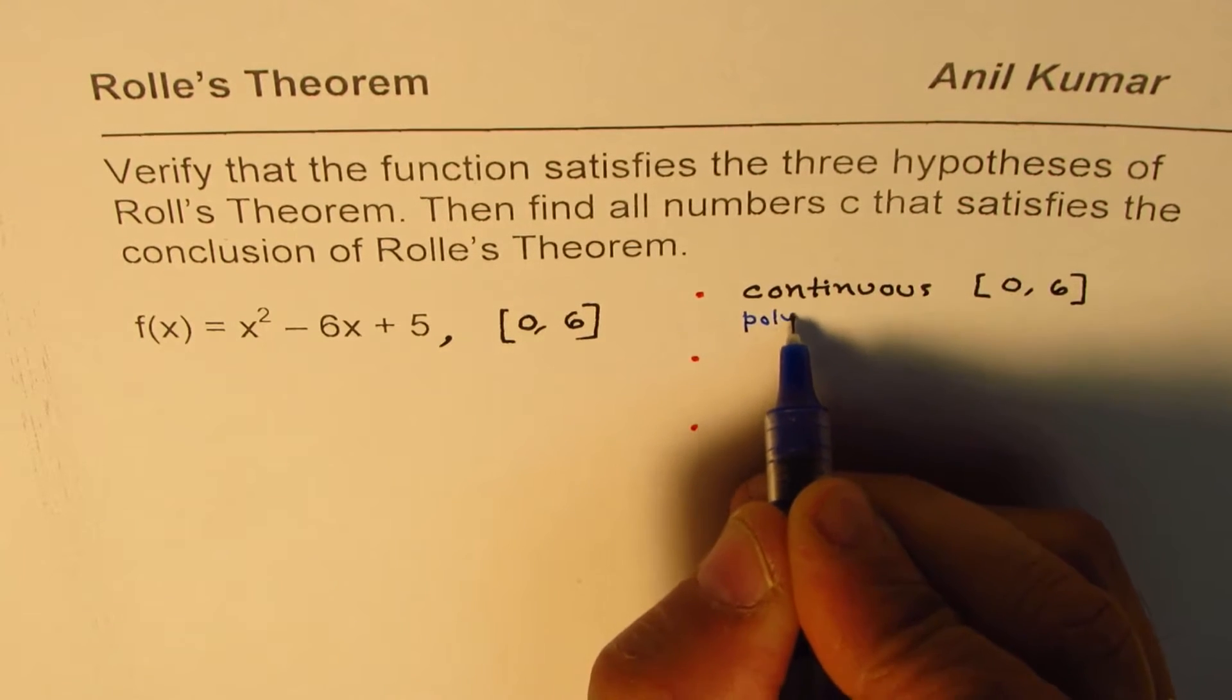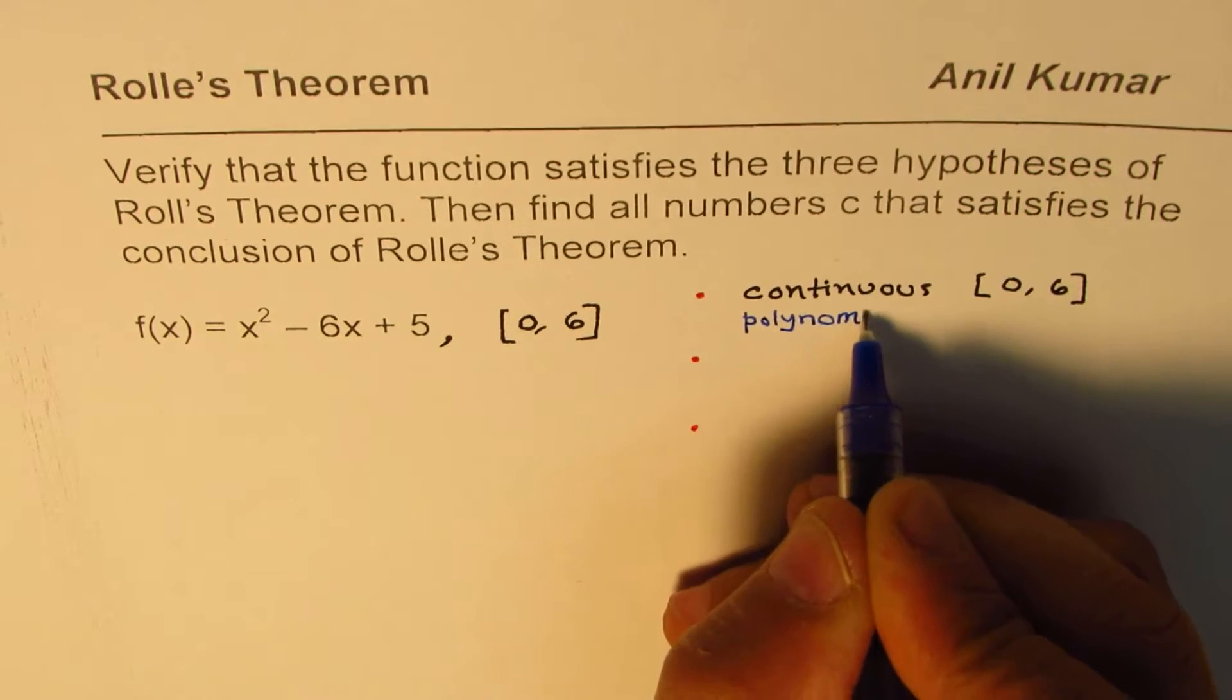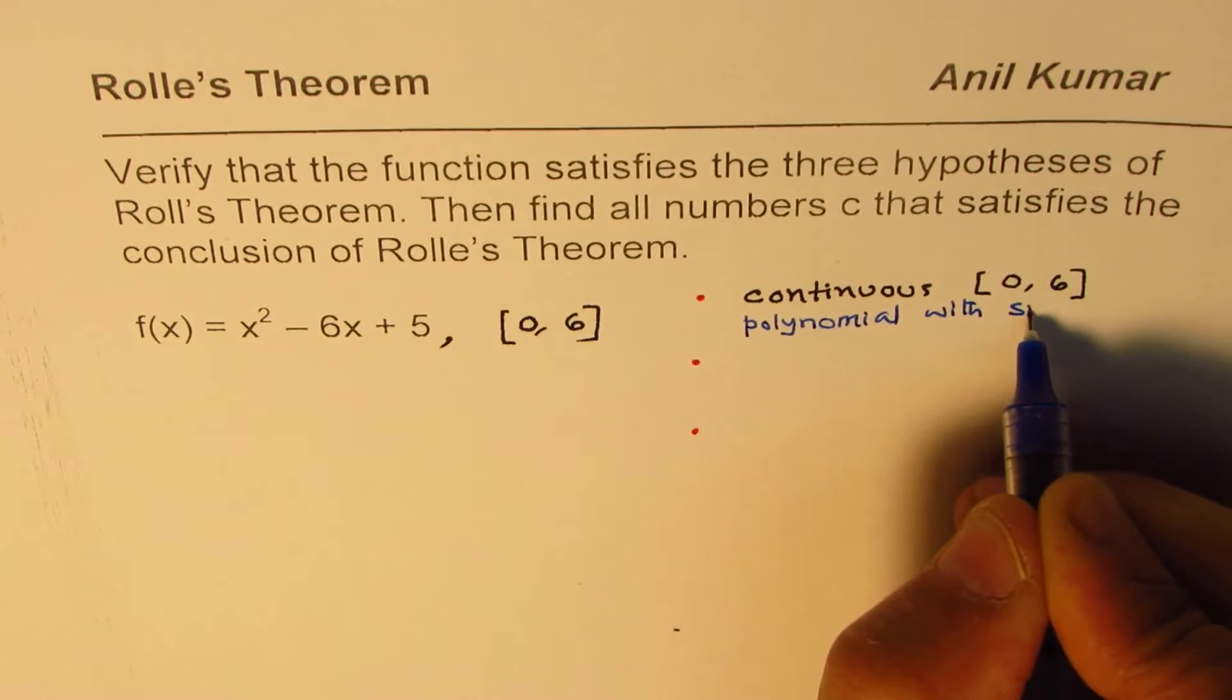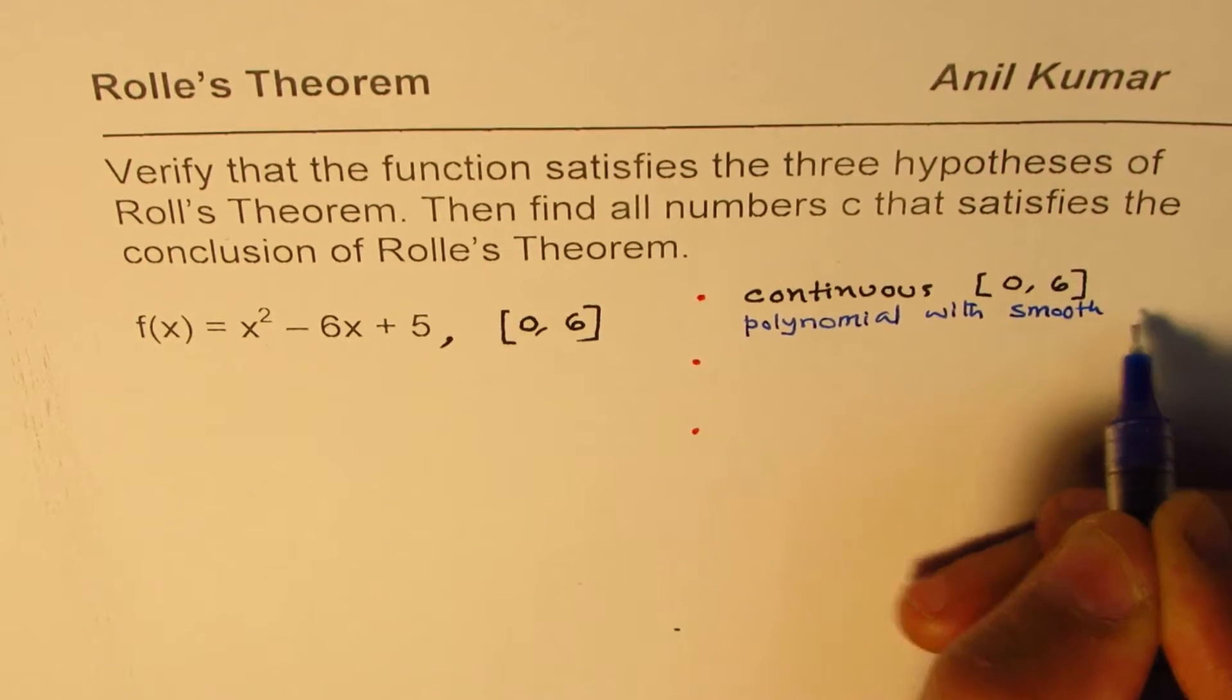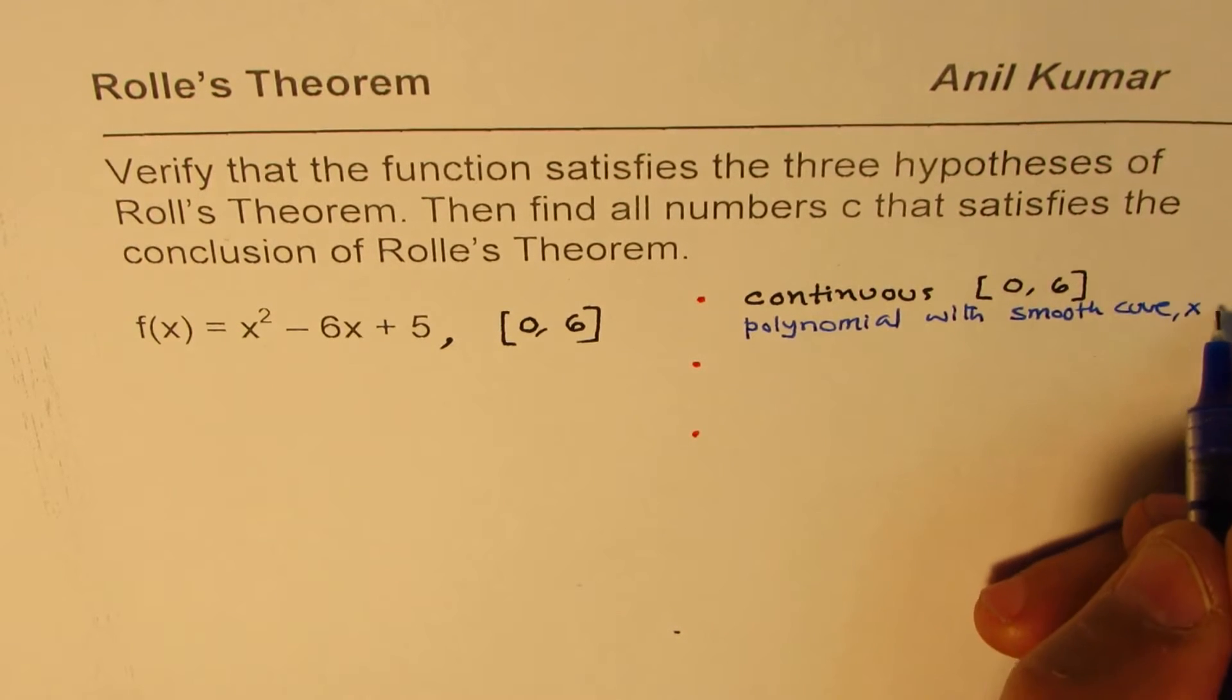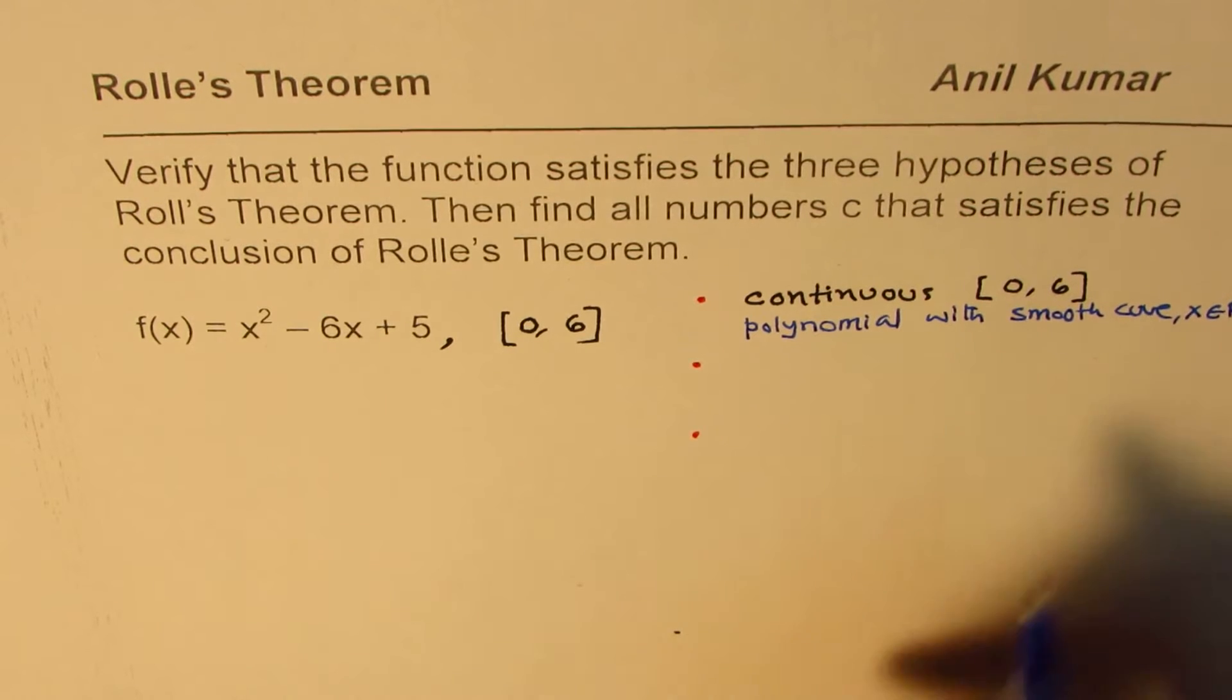So, we say it's a polynomial with smooth curve for x belonging to real numbers.